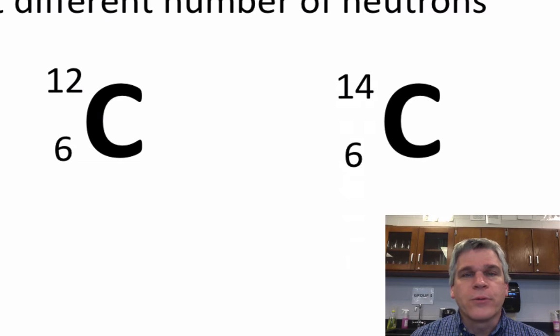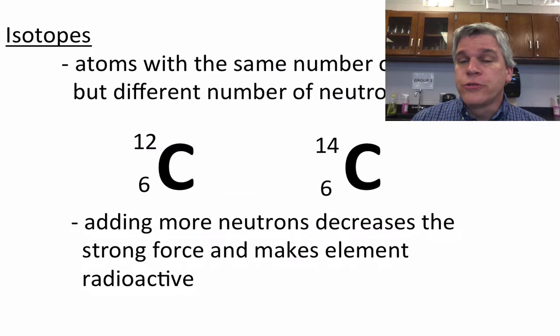Because there's more neutrons, the protons are a little bit farther apart from one another. By adding more neutrons, we decrease that strong force, and that makes the element radioactive. So you may have heard of carbon dating before. This is what they're looking at is carbon-14, not carbon-12.